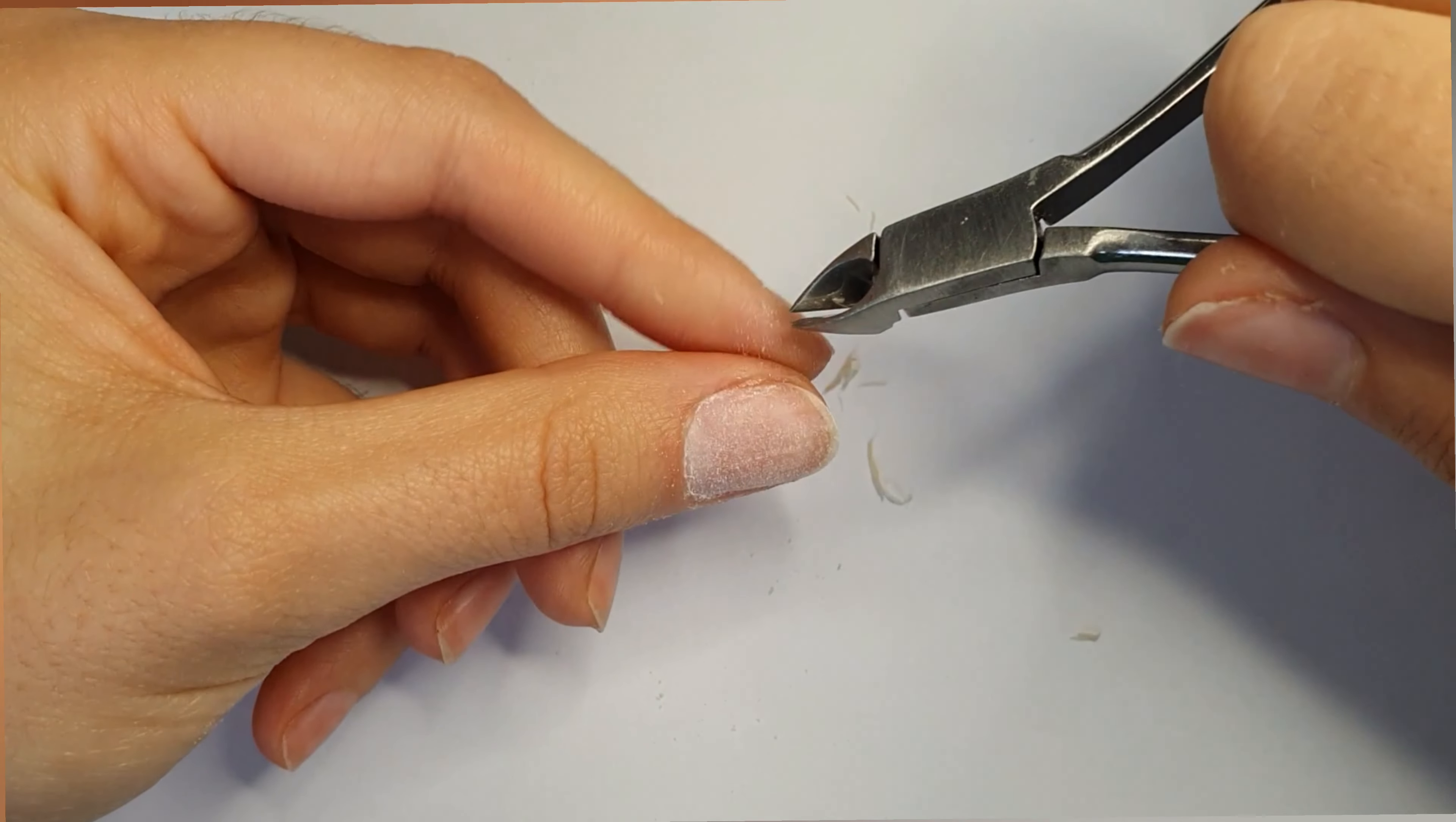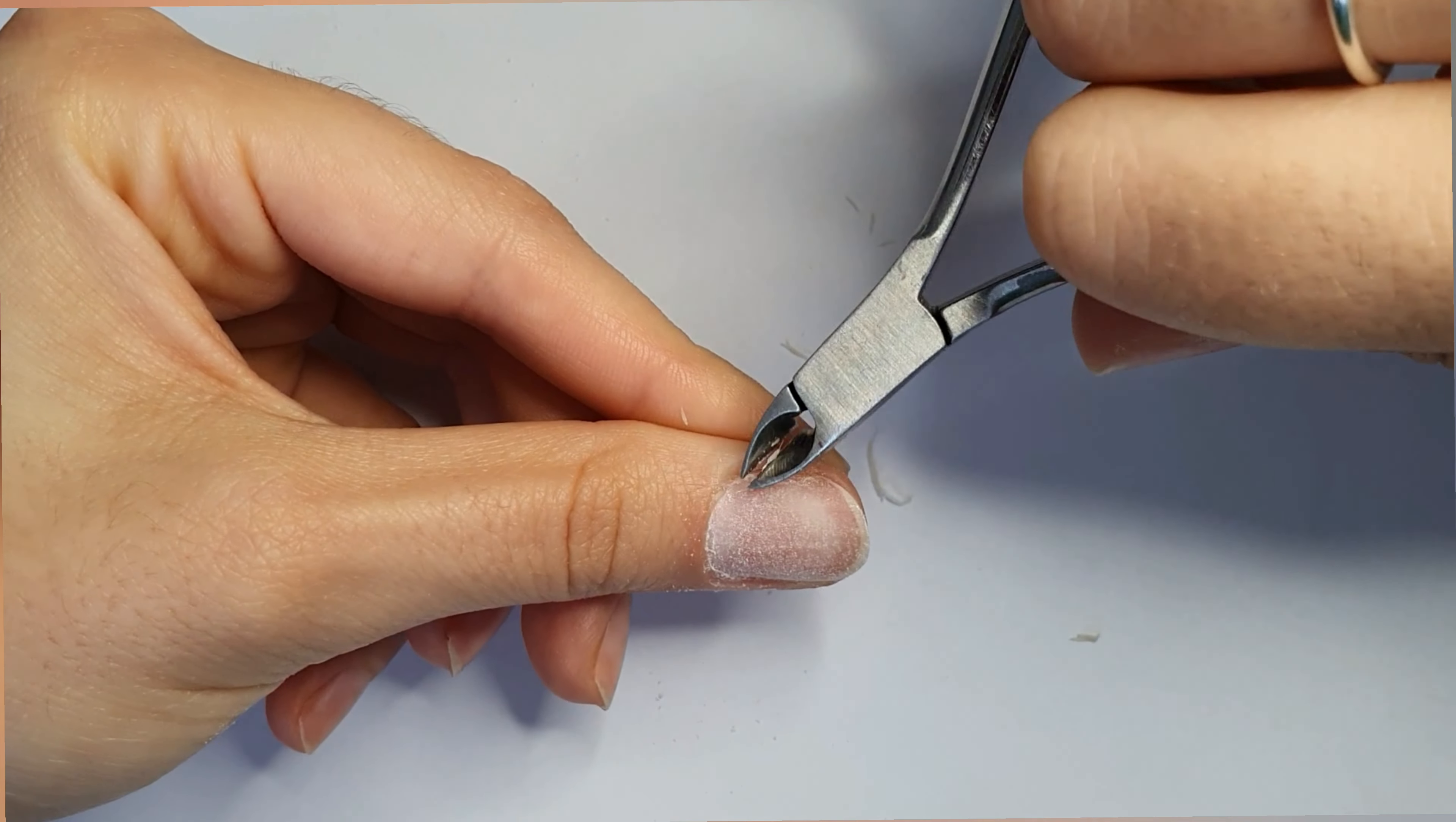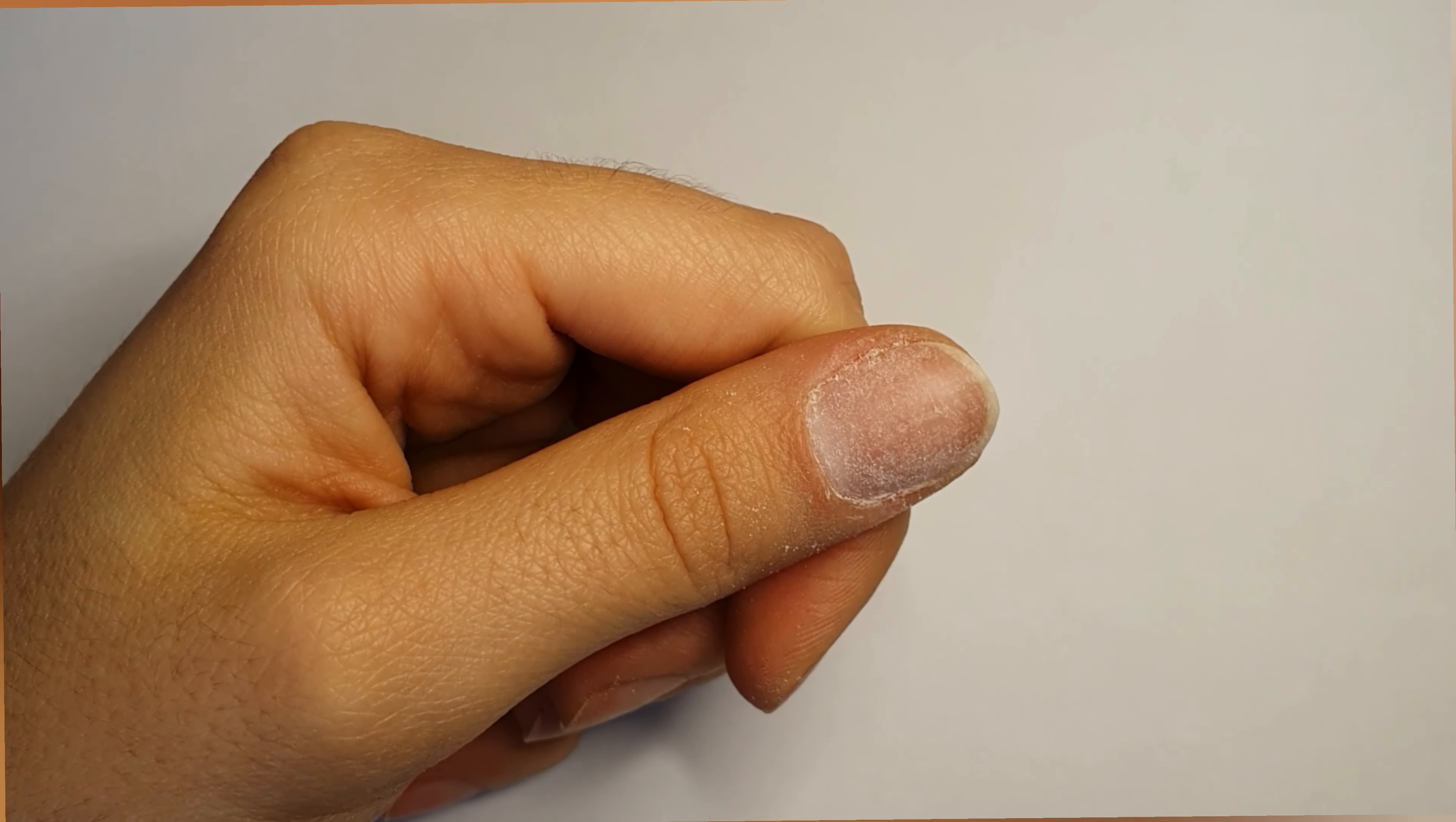You're supposed to cut only the dead part of the skin. If you go too deep it may cause bleeding and it will hurt you or the person you're doing nails for. So make sure that you only cut the dead parts of the skin.